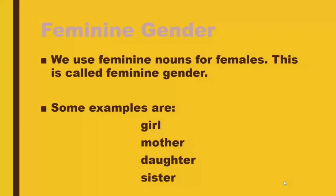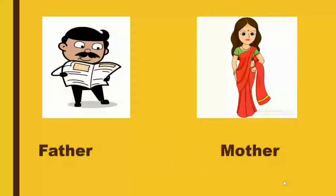Feminine gender — we use feminine nouns for females. For example: girl, mother, daughter, and sister. Let us see a few more examples.